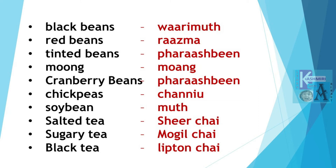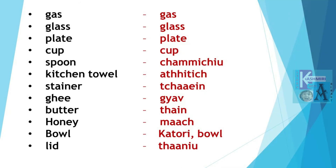Salted Tea is Sheer Chai. Sheer Chai. Sugary Tea is Mogul Chai. Mogul Chai — they are specific to the region of Kashmir. Black Tea with or without milk is called Lipton Chai. There are a lot of words that are borrowed from outside Kashmir.